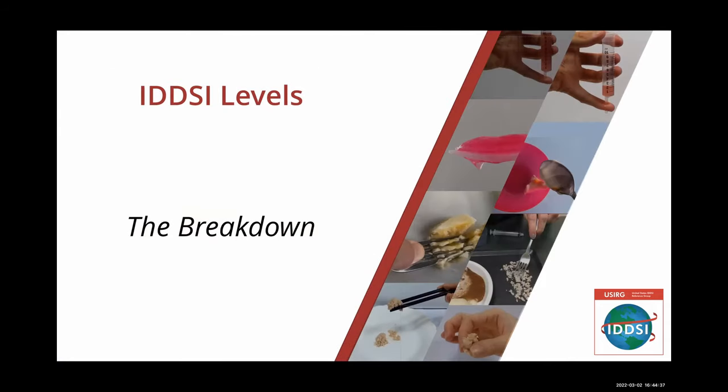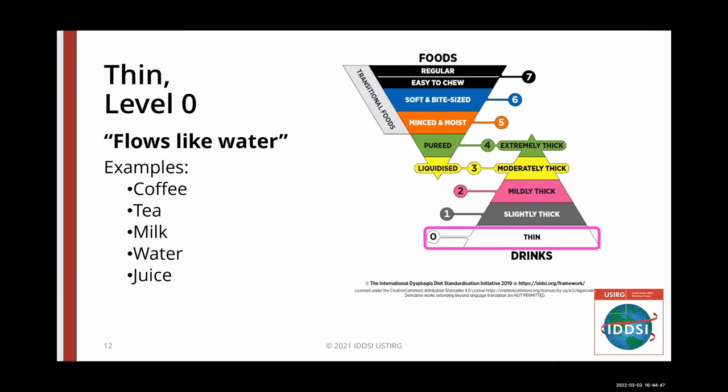Now that we understand why it is so important to implement IDDSI, let's review the terminology and descriptions for each IDDSI level. When using IDDSI descriptors, make sure to always use at least two identifiers — the words and the number. You can also see the IDDSI symbol that easily identifies the level with a color and number. Thin, level zero, flows like water. Milk, tea, coffee, juice, soup broth, and many supplements are all examples of level zero drinks.